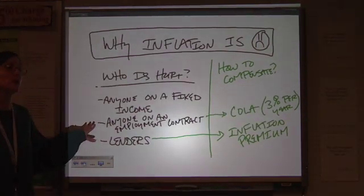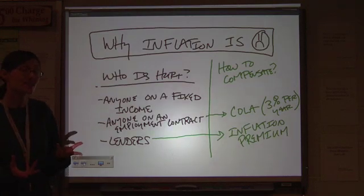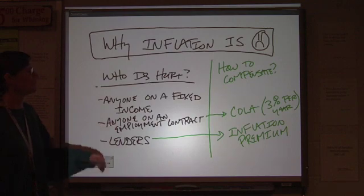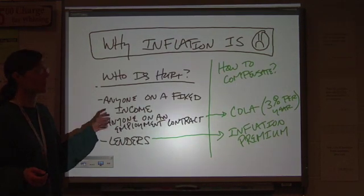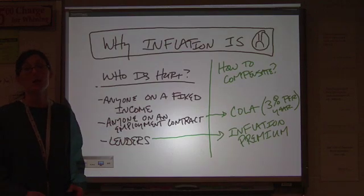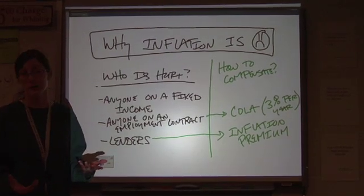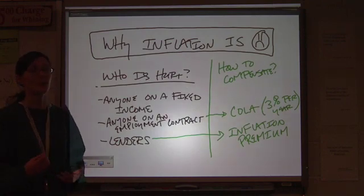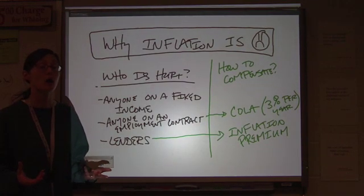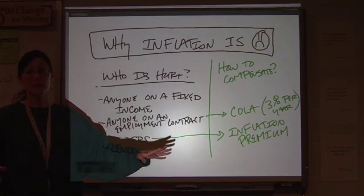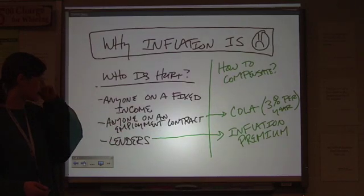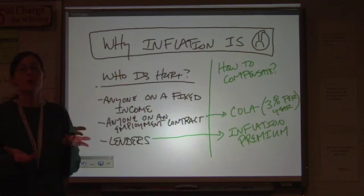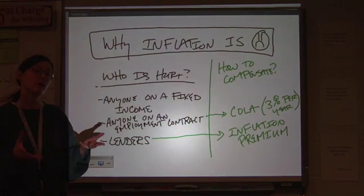The next group that's likely to be hurt by inflation, unexpected inflation is probably the best way to put that, is anyone on an employment contract. This would be somebody, for example, whose salary is set for a year, it's only up for review at the end of that twelve-month period, or anybody who's under contract with a labor union where the contract is only negotiated periodically. Let's say, for example, that you are with the airline mechanics union and you have a two-year contract. For that two-year period, you're pretty much stuck in terms of your wages, your benefits, and all that stuff. If you're on an employment contract, then there's no renegotiation today and you're going to have to wait on it.